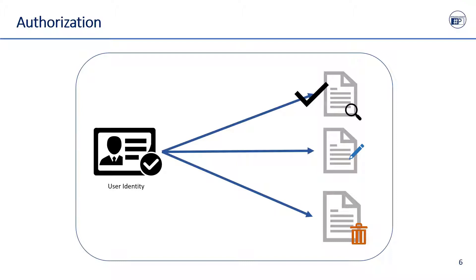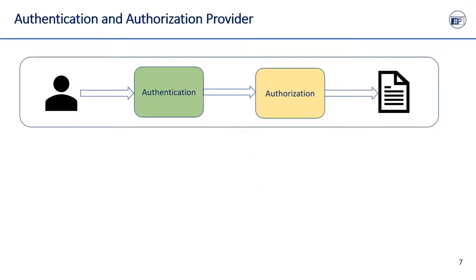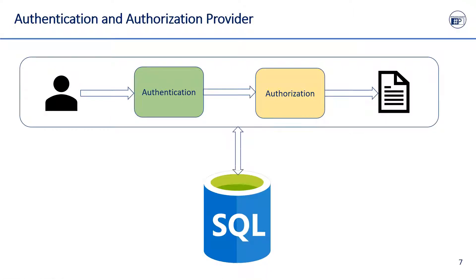The user is allowed to edit file content, but when the user tries to delete the file, the system will return an access denied or forbidden response. Generally, the system uses some kind of storage system like a database or NoSQL database to persist user information.